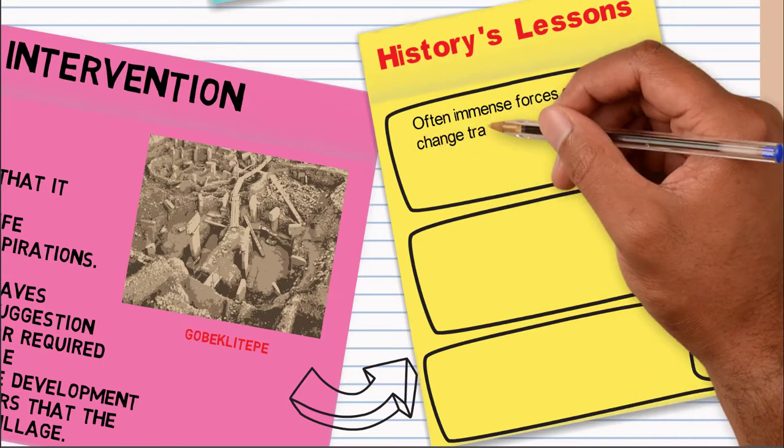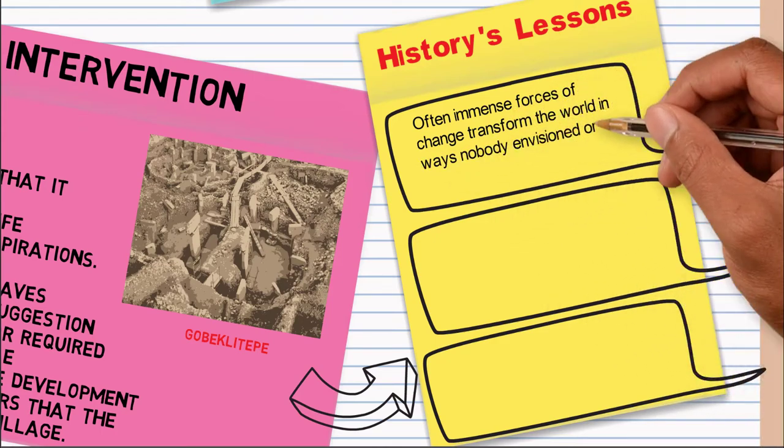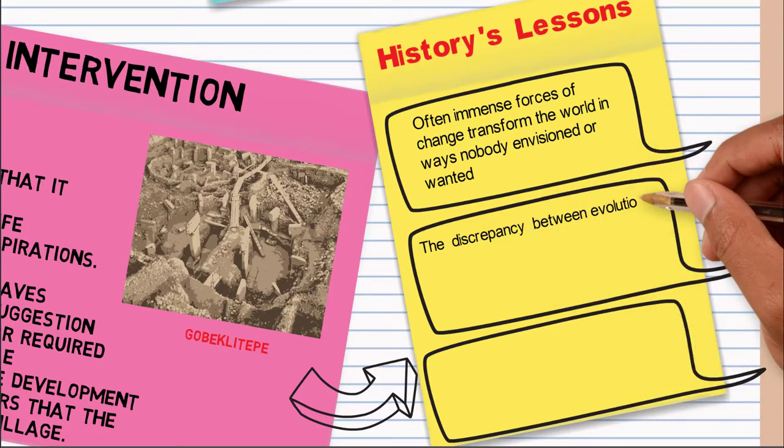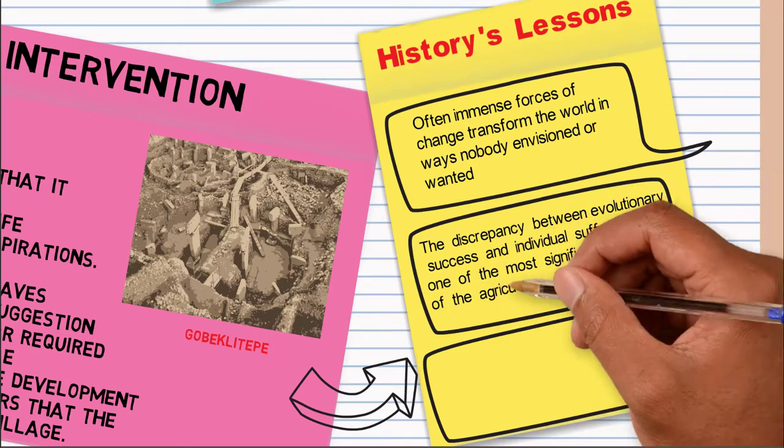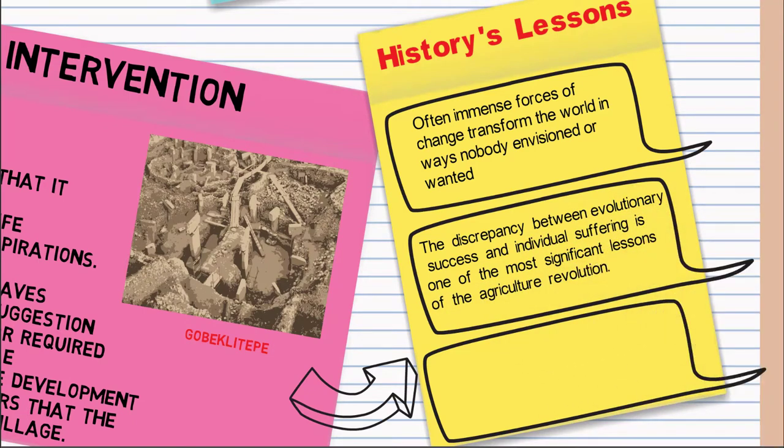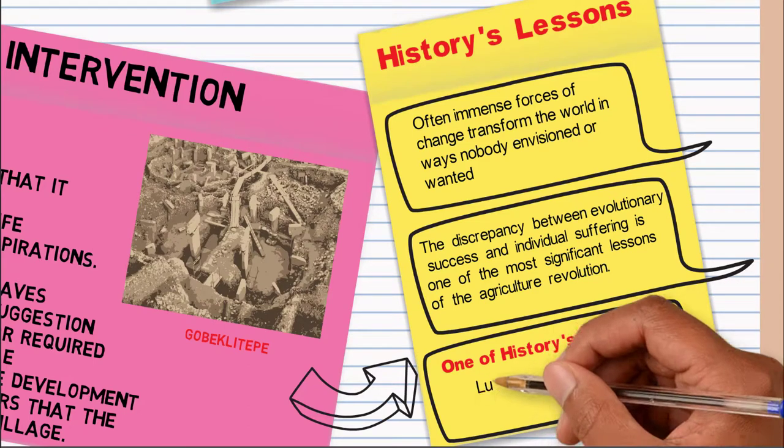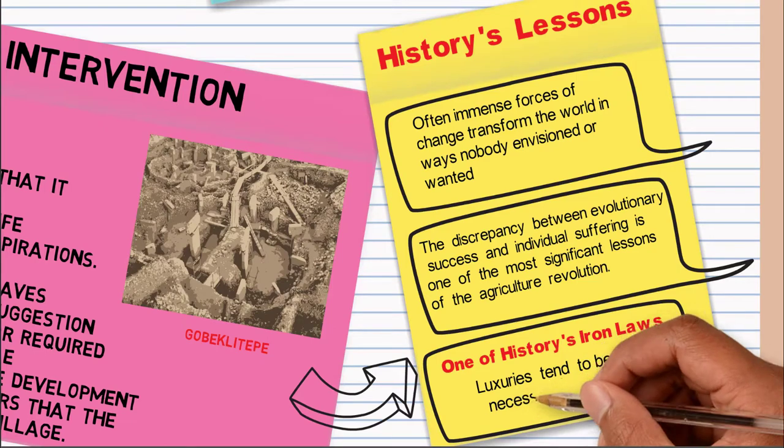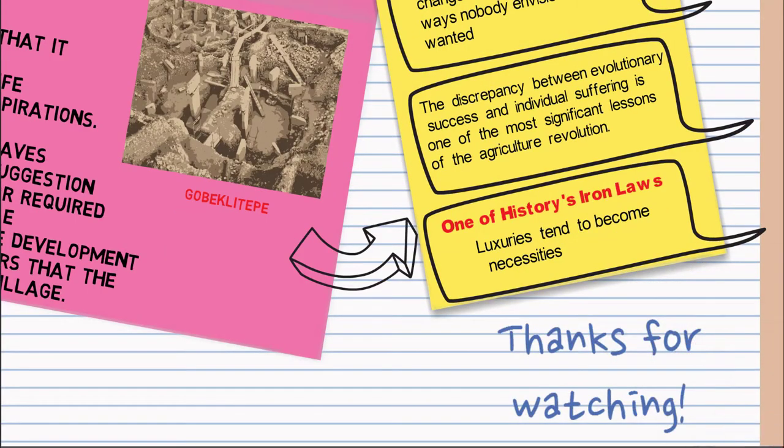So anyway, history's lessons. One is that immense forces of change transformed the world in ways nobody envisioned or wanted. And that's important for us to remember later. The discrepancy between evolutionary success and individual suffering is one of the most significant lessons of the agricultural revolution. It wasn't all positive. And one of history's iron laws is that luxuries tend to become necessities. Now, this is what he deals with in this first part of agricultural revolution.